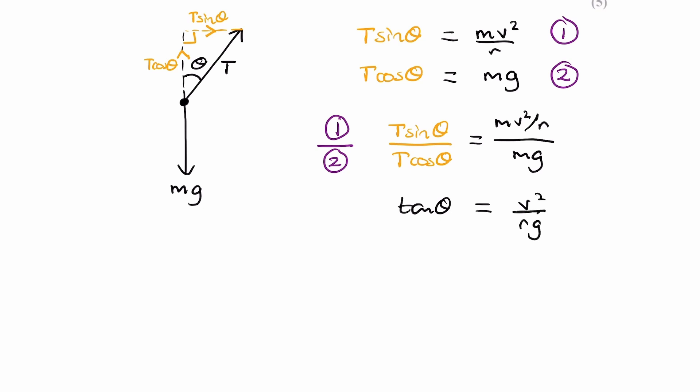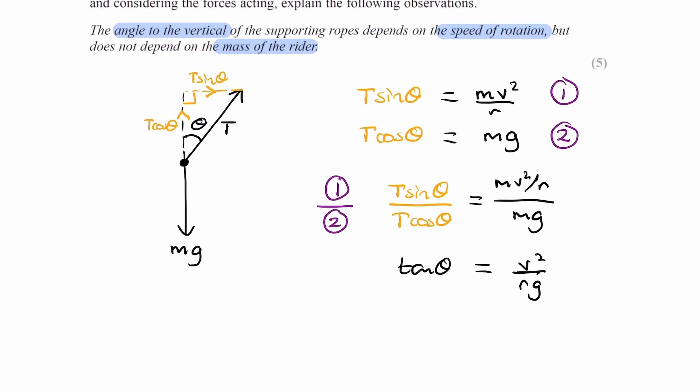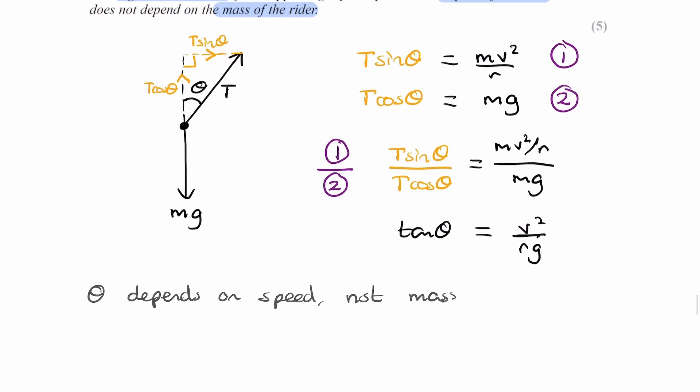And so what we see from this is that the angle to the vertical depends on the speed, but not mass. We can see that in the equation. Looking at the text in italics, the angle to vertical depends on the speed of rotation, but does not depend on the mass of the rider. We have shown that from this equation here. And then just have a brief conclusion to finish off.